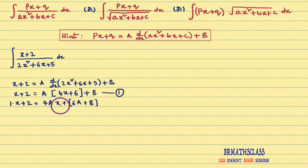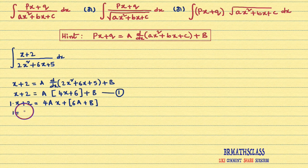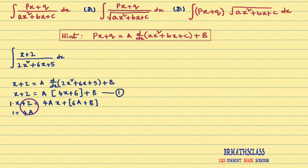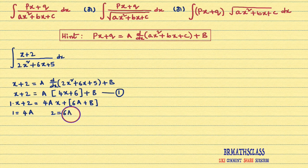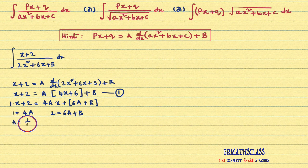You can observe that 6a+b is the constant part and 4a is the x-coefficient. Now x+2 can be written as 1·x + 2. Comparing the x-coefficients: the x-coefficient on the left is 1 and on the right is 4a. So 1 = 4a, which gives us a = 1/4.